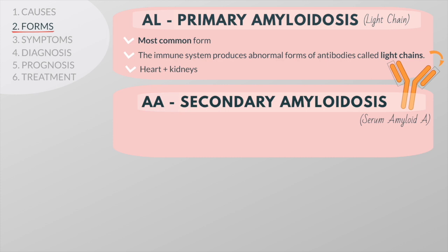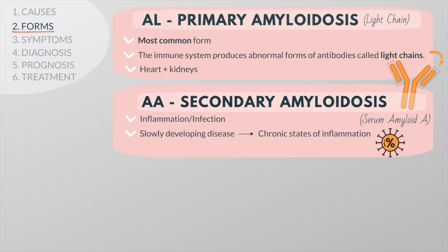Secondary amyloidosis is characterized by a protein called serum amyloid A, which is produced by the body in response to inflammation or infection. High levels of this protein do not cause amyloid deposits over the short term, but can lead to deposits over a longer period of time. For this reason, diseases that cause chronic inflammation — such as rheumatoid arthritis or chronic tuberculosis — can result in amyloid deposits over several years. Secondary amyloidosis commonly affects the kidneys, liver, and spleen.